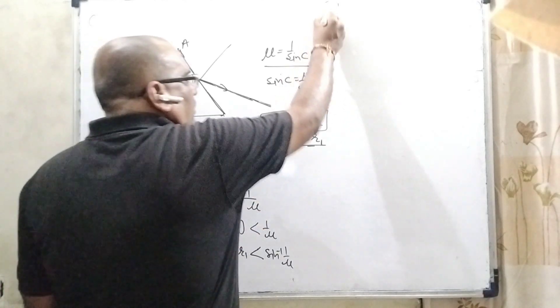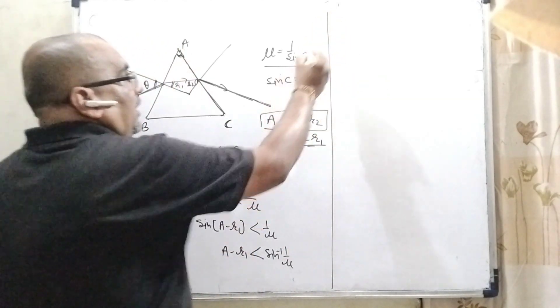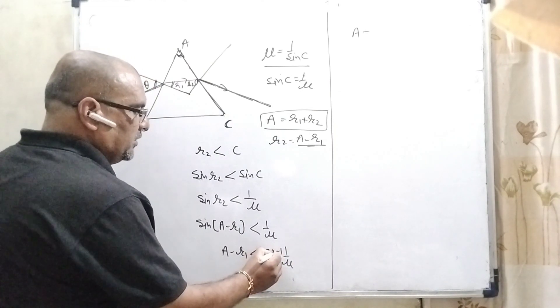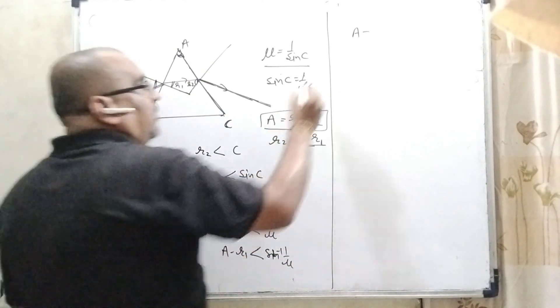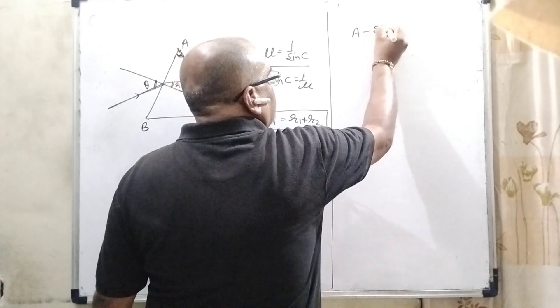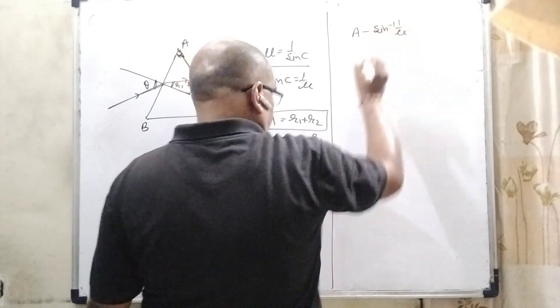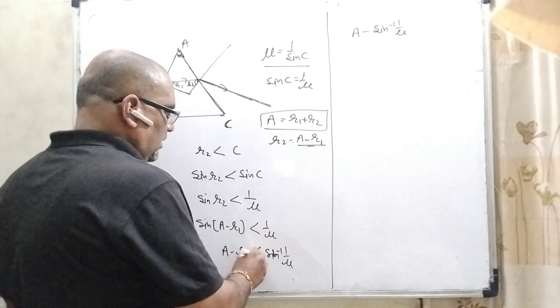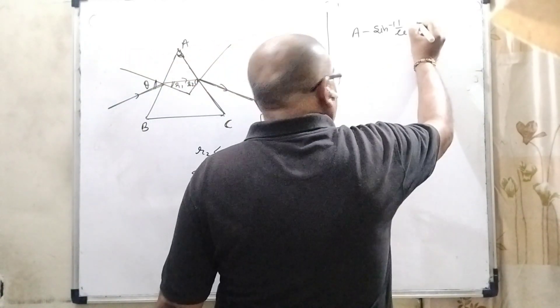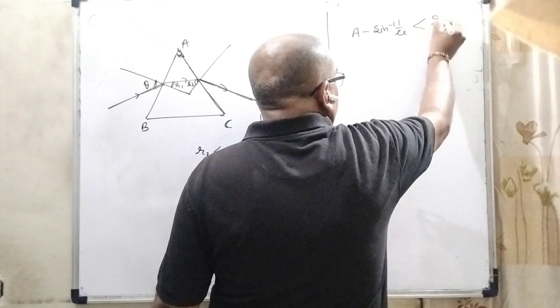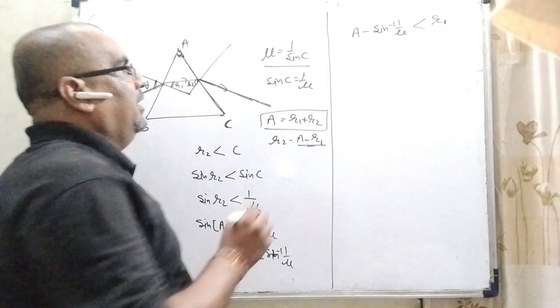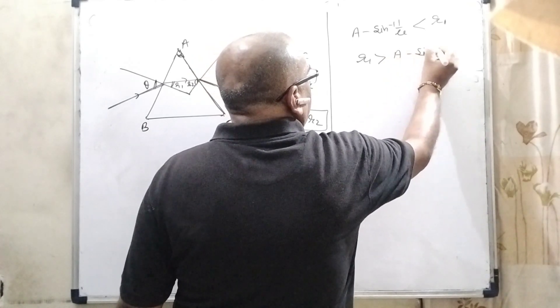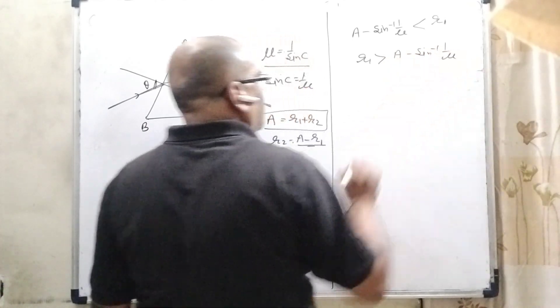So A minus R1 is less than sin inverse 1 by mu. So now it can be written as A minus this value is transmitted or transposing to the left side. Now it becomes A minus sin inverse 1 by mu and this R1 goes to the right side.